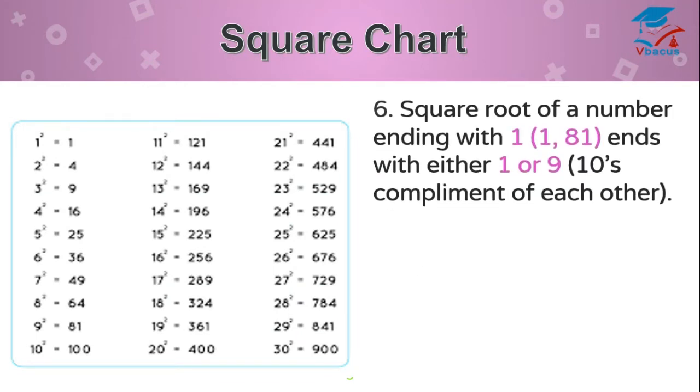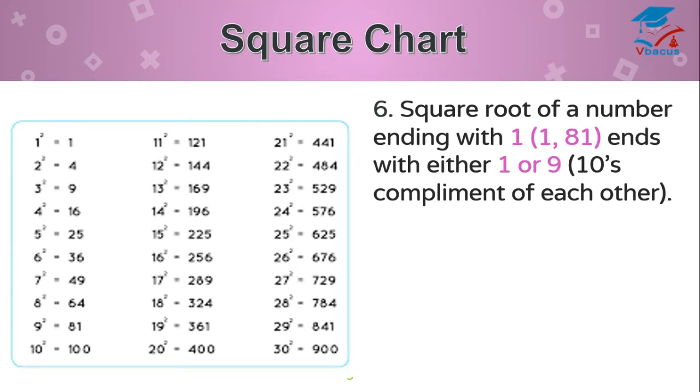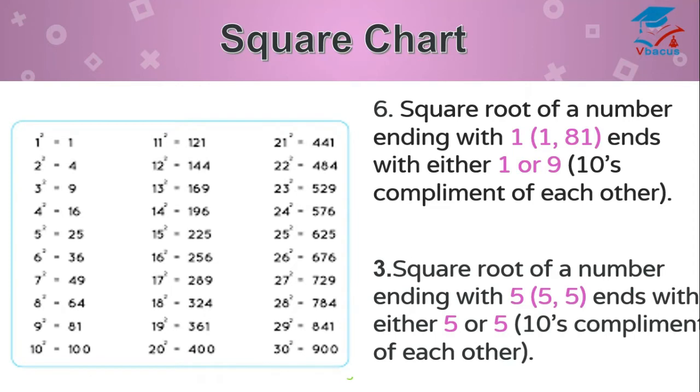Square root of a number ending with 1 ends with either 1 or 9. Square of 1 is 1, square of 9 is 81. Both numbers end with 1. So both are complements of each other. Square root of a number ending with 5 ends with 5. Again, 10 is complements of each other.